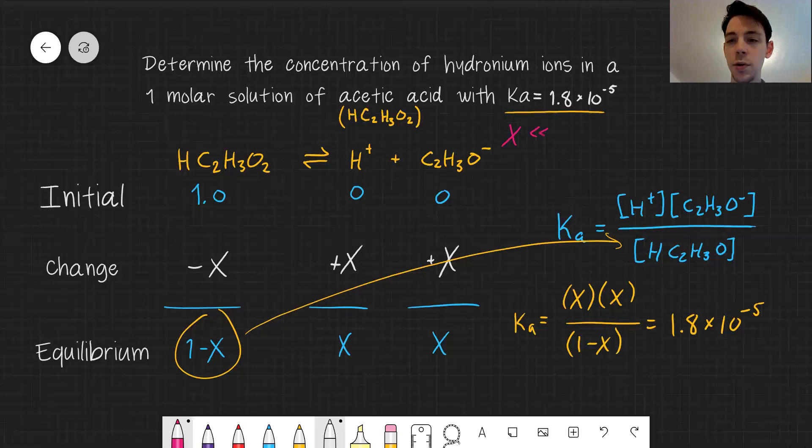And we can assume that X, the number of moles that dissociate, is going to be a small fraction of the total. Our total starting value of one molar, probably only about 1% of that is going to actually dissociate.